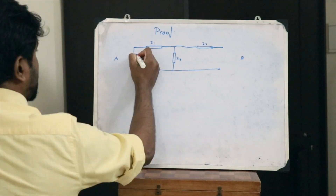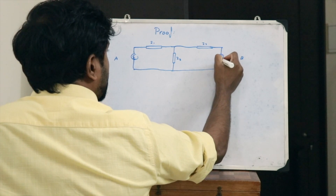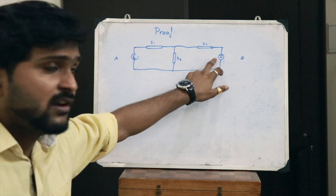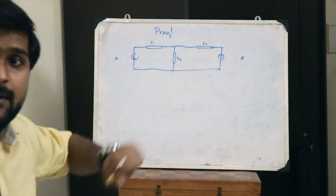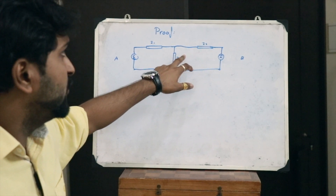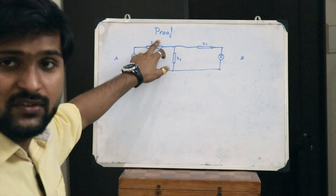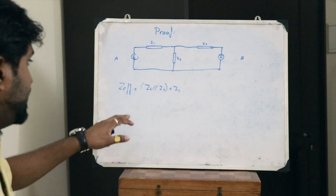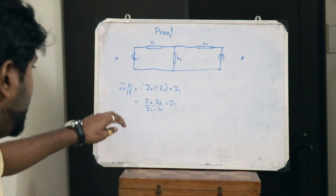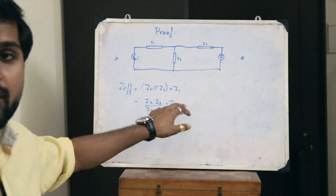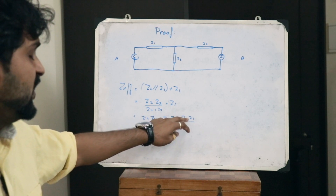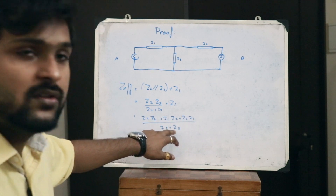In the first case, an EMF is applied at the terminals of antenna A and current is measured at the terminals of antenna B. The effective impedance is Z2 parallel to Z3, in series with Z1. So Z_eff equals Z2 parallel Z3 plus Z1, which equals (Z2·Z3)/(Z2+Z3) + Z1, simplifying to (Z2·Z3 + Z1·Z2 + Z3·Z1) / (Z2 + Z3).